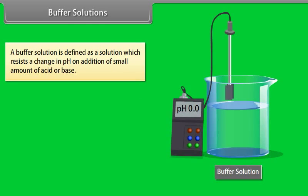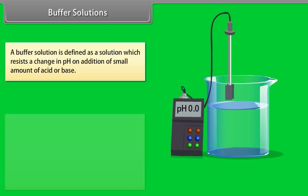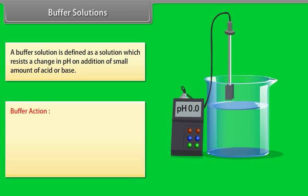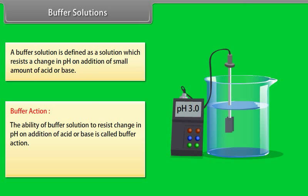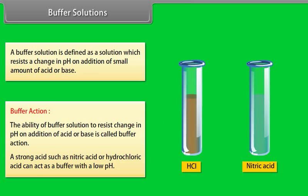Buffer solutions: A buffer solution is defined as a solution which resists a change in pH on addition of a small amount of acid or base. Buffer action is the ability of a buffer solution to resist change in pH on addition of acid or base. A strong acid such as nitric acid or hydrochloric acid can act as a buffer with a low pH.